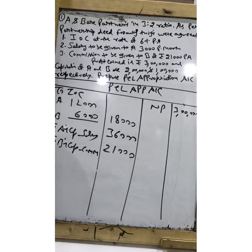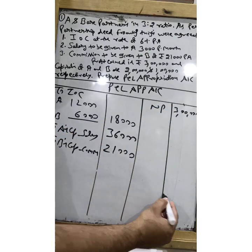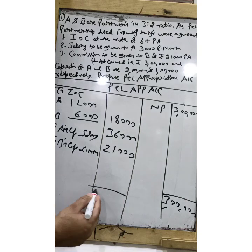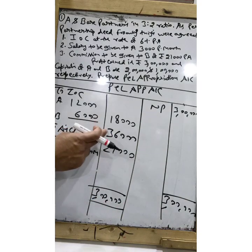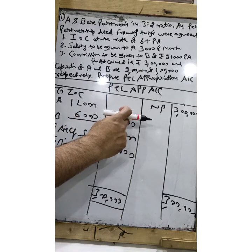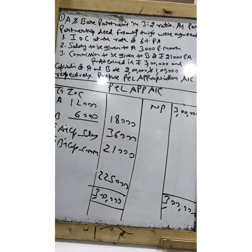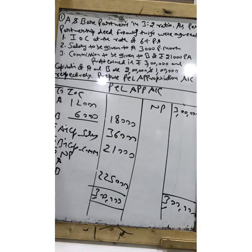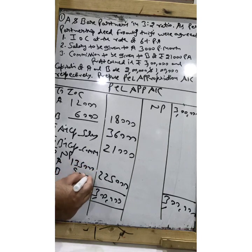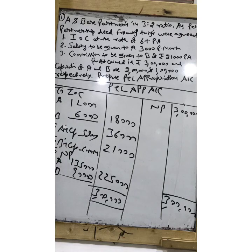Now, what we are left with: the credit side is ₹3 lakh, debit so far is 18,000 + 36,000 + 21,000 = ₹75,000. We are left with ₹2,25,000 as profit. This profit you need to distribute among A and B in the 3:2 ratio. That comes to ₹2,25,000 × 3/5 = ₹1,35,000 for A, and ₹2,25,000 × 2/5 = ₹90,000 for B.